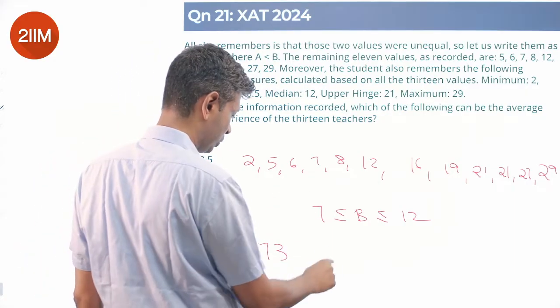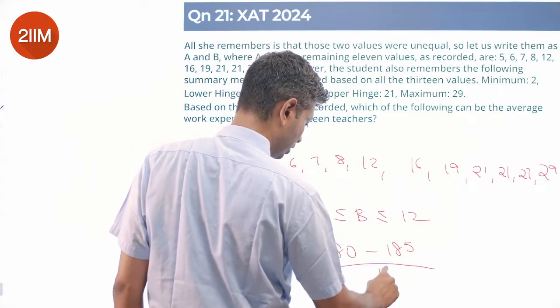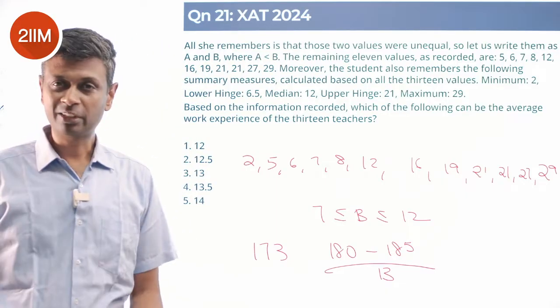So I can add 7 to it, so we go to 180 to 185 divided by 13. So 180 to 185 divided by 13, that's my average.